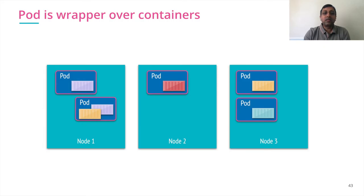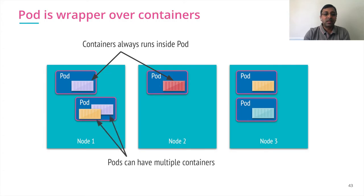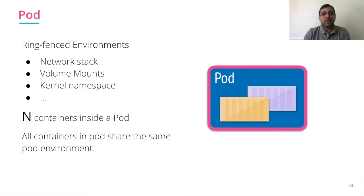Pods are nothing but a wrapper over the containers. Containers are always running inside a pod — that's the way you run your container in the Kubernetes world. You can have multiple containers running inside pods. A pod is nothing but a ring fence environment which provides the network state, volumes, and kernel namespace to the containers. Multiple containers inside a pod share the same pod environment.